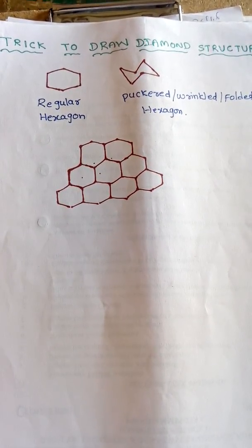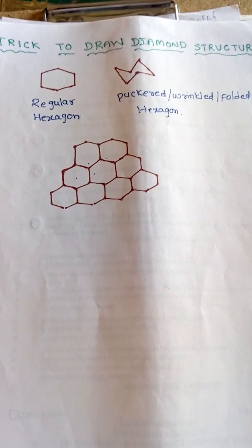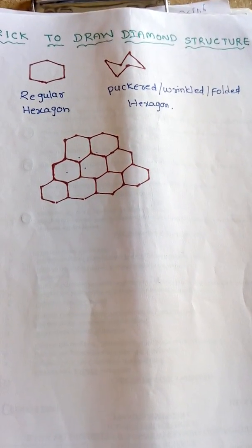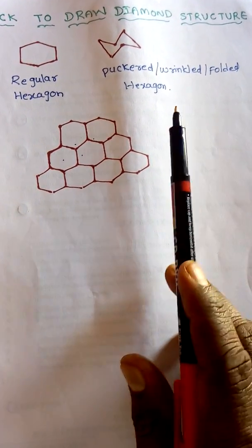In this video, we will learn a trick to draw the structure of diamond very easily. For that purpose, we need two fundamental structures. First one is the regular hexagon and the second one is the puckered or wrinkled or folded hexagon.